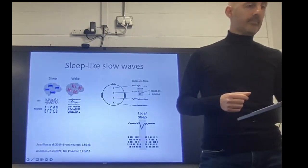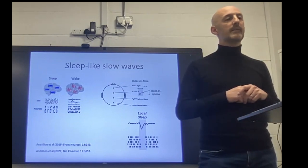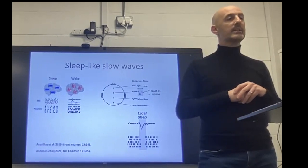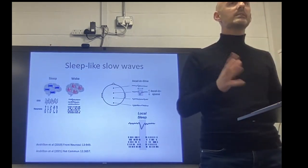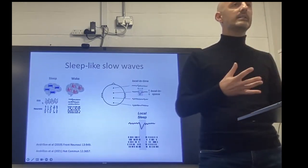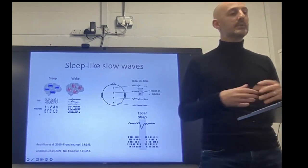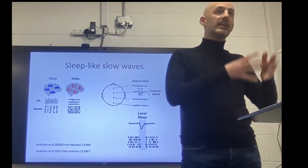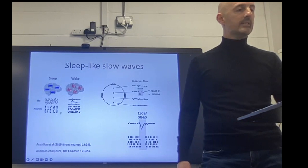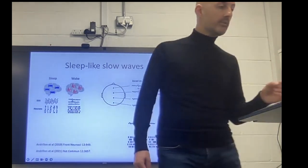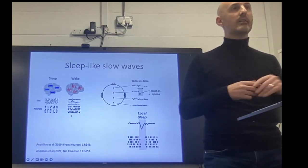My colleague Thomas Andrillon, because of this ambiguity, wanted to explore a different marker of attentional lapses — and that is sleep-like slow waves. Traditionally, EEG activity when we're asleep versus awake is considered quite dissociable. When we're asleep, we tend to show trains of high-amplitude delta waves across the scalp. At the neuronal level, this corresponds to synchrony of activation and deactivation. This is considered quite distinct from waking states, when EEG is more desynchronized with more high frequency activity.